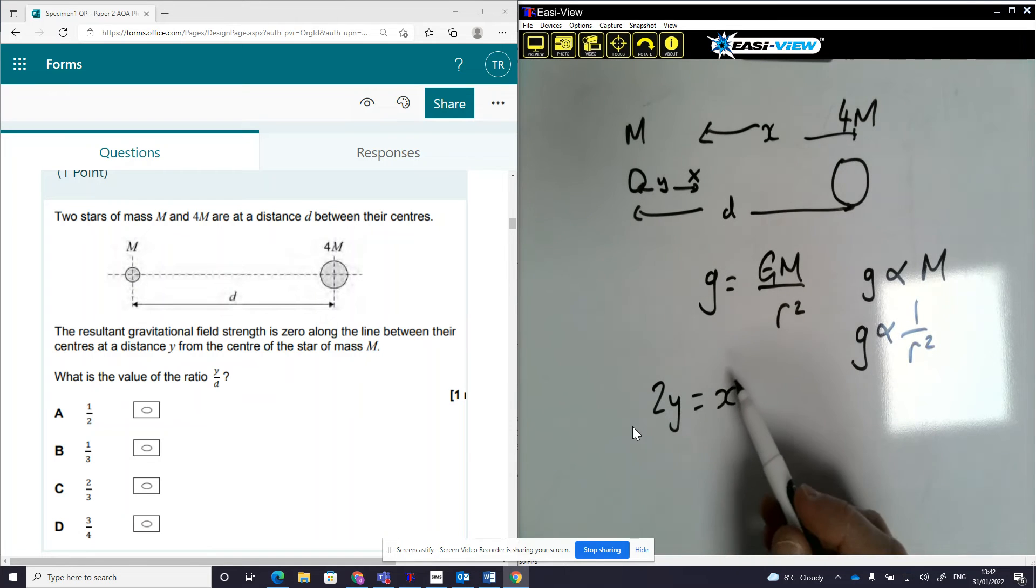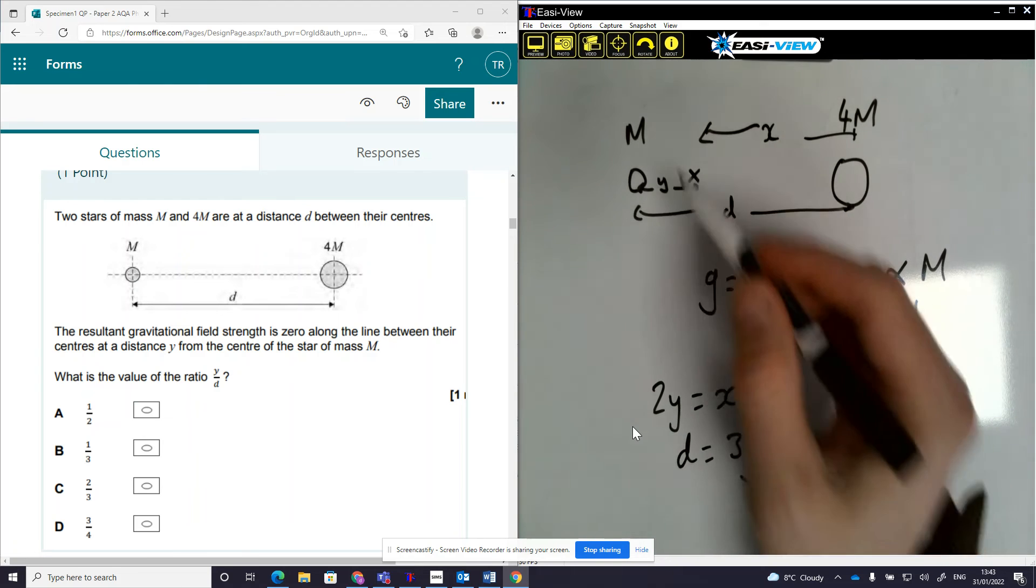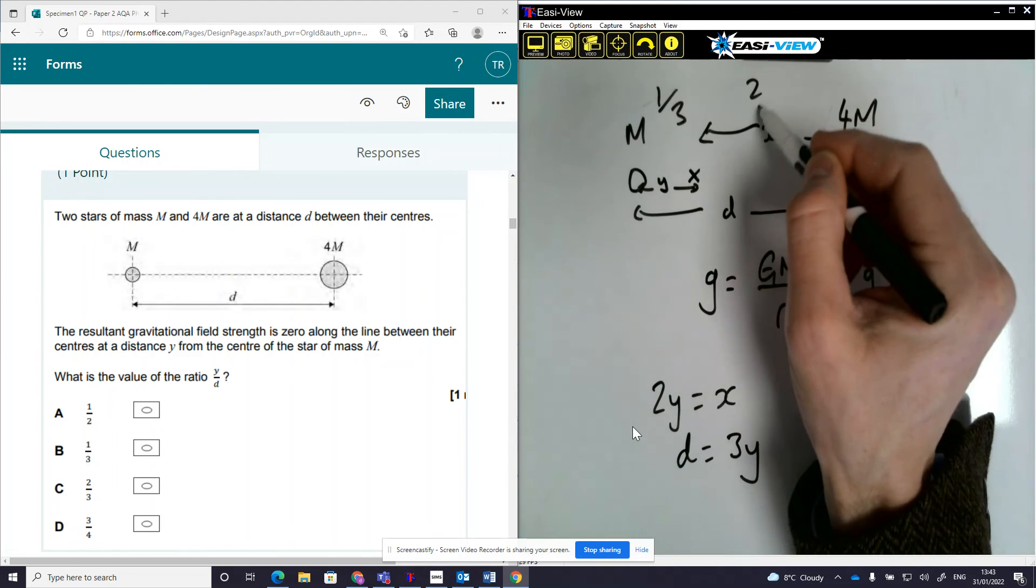So that then means I'm splitting this into three. I'm splitting the whole thing into three. So two lots of Y equals X. Then the whole distance D is three lots of Y. So I can see that this is a third and this must be two thirds.